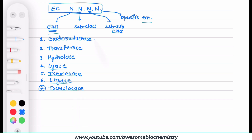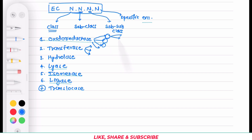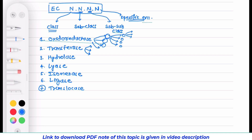Each of these classes has several different subclasses, and the subclass number is placed in the second digit position. Each subclass can be further divided into multiple sub-subclasses, whose number goes in the third digit position. Each sub-subclass has a list of enzymes, and the specific enzyme number goes in the fourth digit position.